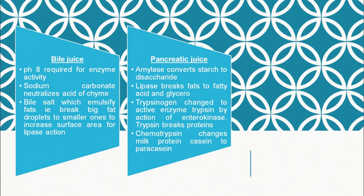The pancreatic juice is secreted into the duodenum and contains amylase, which converts starch to disaccharides. It also has lipase, which breaks down fats into fatty acids and glycerol, and trypsinogen, which is activated to trypsin by enterokinase. Trypsin breaks proteins, continuing the protein digestion that began in the stomach. There is also chymotrypsin, which changes milk protein casein to paracasein.